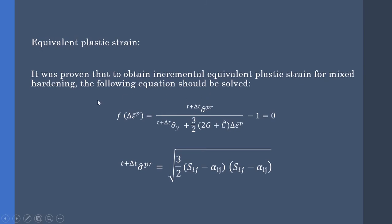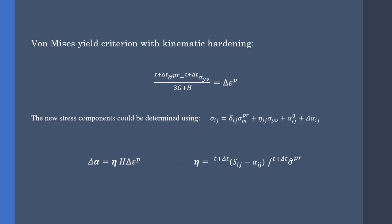It was proven that to obtain incremental equivalent plastic strain for mixed hardening, we should solve the following equation. In which the sigma pr is the predictor stress or the trial stress. Now, we transform the equation to be used in kinematic and isotropic hardening. For kinematic hardening, the following equation should be solved. Note that we can solve this equation directly. And the new stress component can be determined by the following equation.